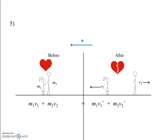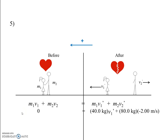Since the ice is frictionless, there's no net external force and we can use conservation of momentum. Write it out in full: m1v1 plus m2v2 equals m1v1-prime plus m2v2-prime. Before anything happens, both are standing still, so total momentum beforehand is zero. Substituting: she has mass 40 kg with unknown velocity v1-prime; he has mass 80 kg going to the right, which is negative, so negative 2 m/s. Pause the video and solve for v1-prime.